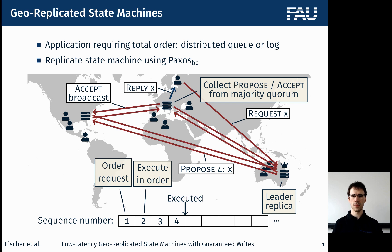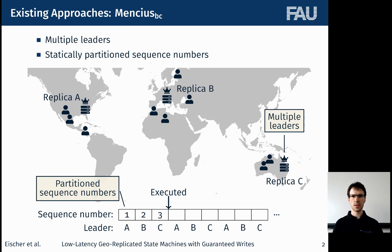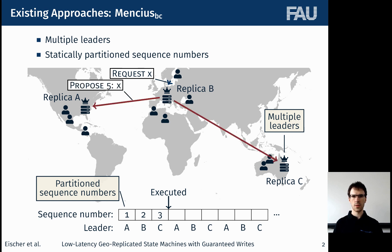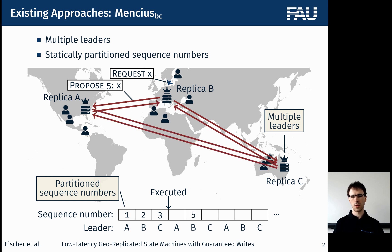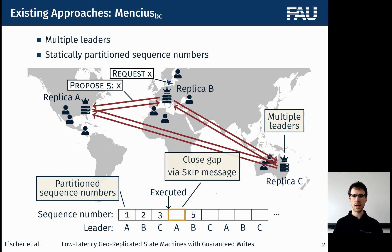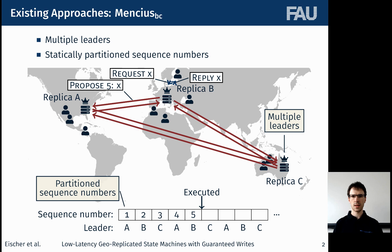Depending on the location of the leader replica, a client might experience different response times. You can avoid that by using multiple leaders like in Mencius, where each leader is responsible for part of the sequence numbers, and a client can send its request to its local replica which then proposes the request for one of its sequence numbers. Afterwards the protocol works as usual. However, we cannot execute a request right away because there is still a gap in the sequence numbers which has to be closed first via skip messages. Once this is completed, a request can be executed and the client gets its reply.